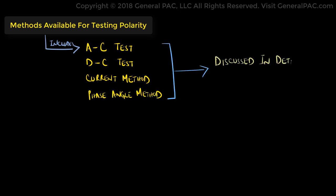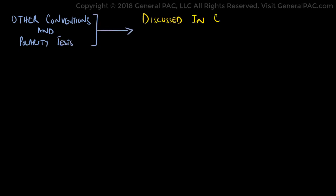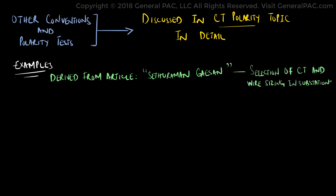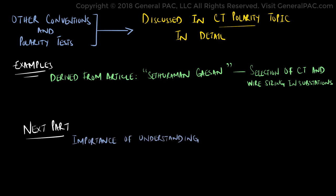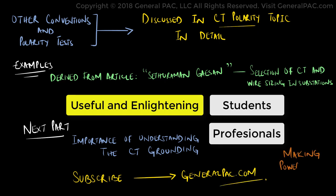We will be discussing these techniques in more detail in another series. In conclusion, knowledge of CT polarity is critical for power systems protection. Other conventions and polarity tests will be discussed in more detail in a dedicated topic for CT polarity. The examples used in this tutorial are derived from an article by the author Sartora Manganesan, selection of current transformers and wire sizing in substations. In part 7, we shall talk about the importance of understanding the concept of CT grounding. We hope you have a continued interest in this topic and series, as a student or professional. Please consider subscribing to GeneralPAC.com, Making Power Systems Intuitive.